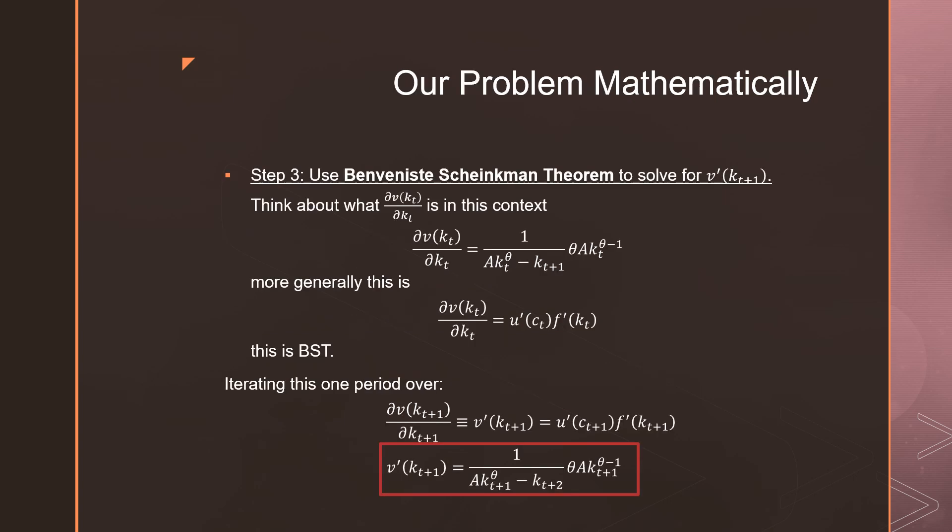So for step number three, we need to go and employ Benveniste-Scheinkman theorem to go and solve for this v kt plus 1 prime. So to do this, we need to think about what v kt, the partial derivative of that with respect to kt, meaning the capital stock in this period is.